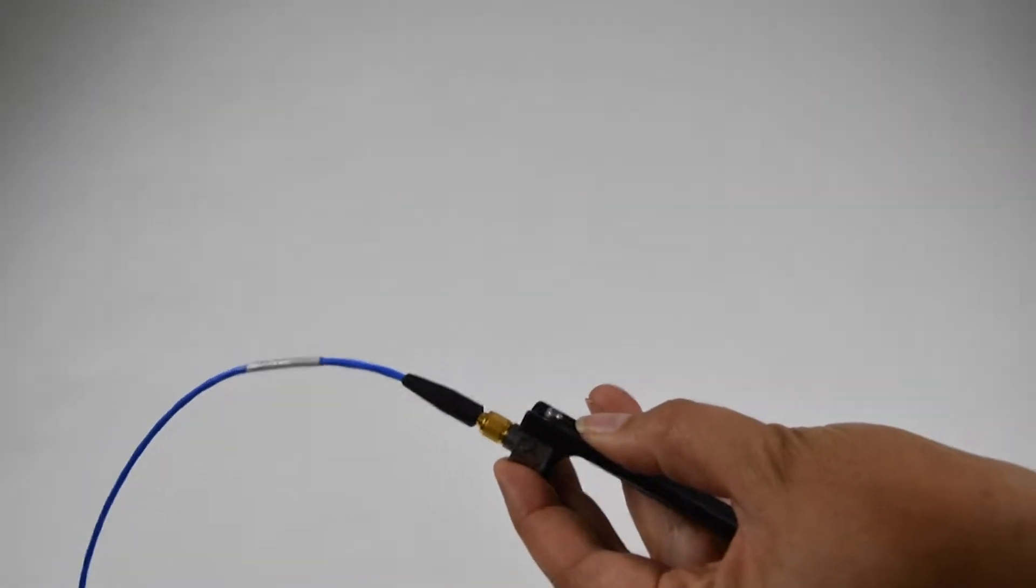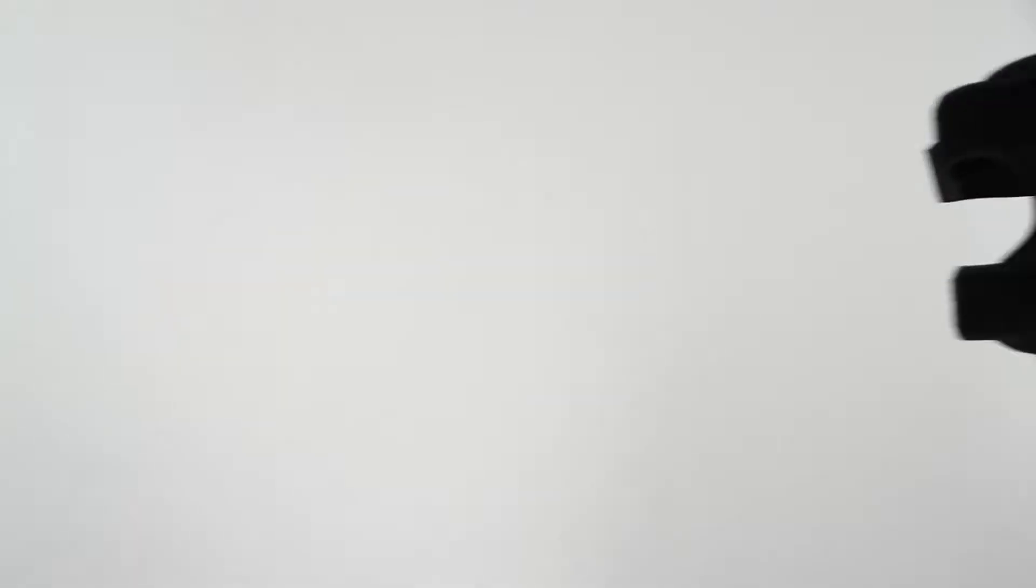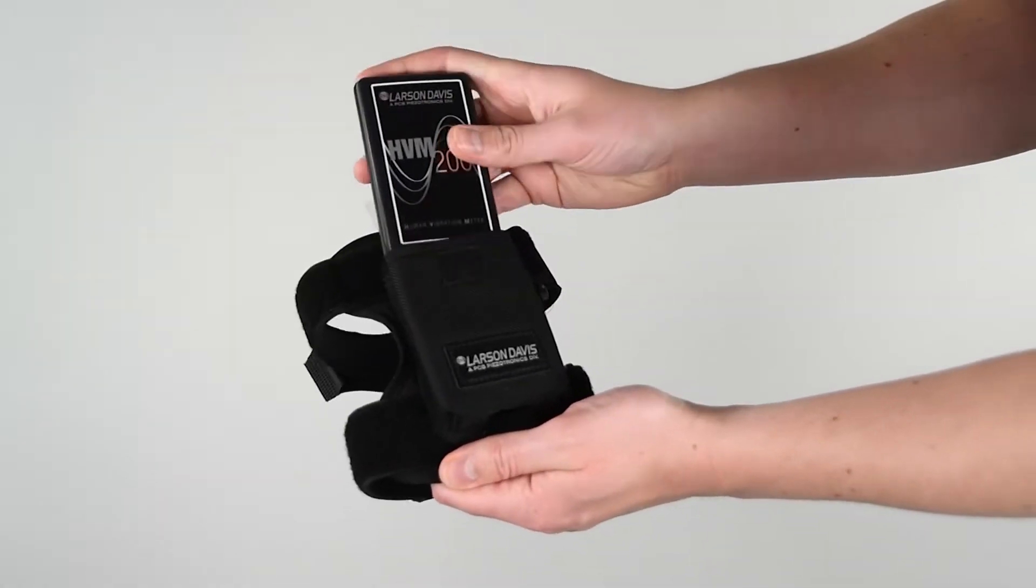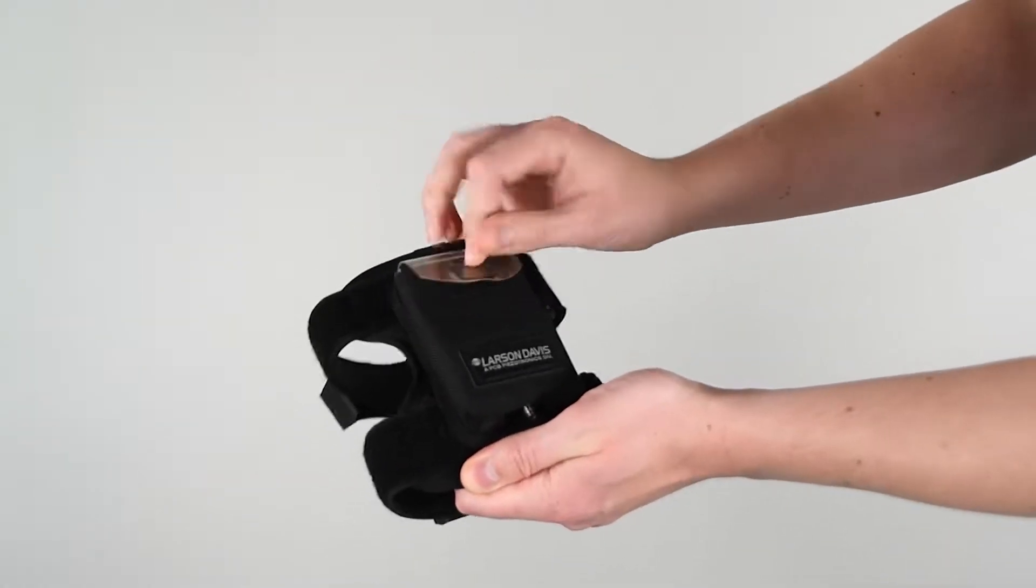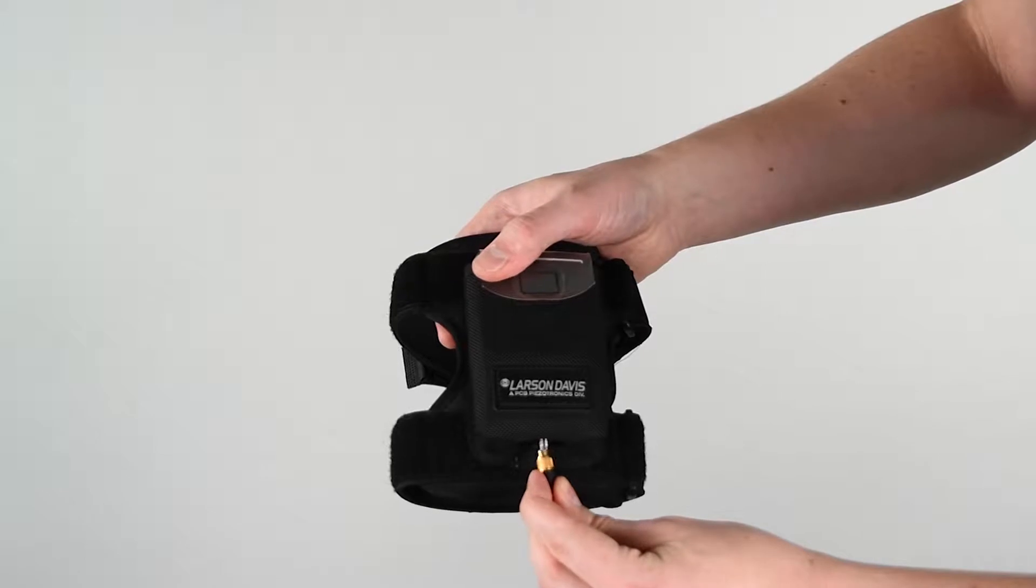Attach the adapter to the sensor with a set screw. Now insert the HVM200 into the armband so that the connector is on the bottom. Connect the sensor to the HVM200.